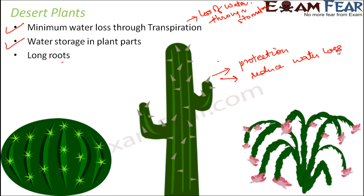Desert plants also have long roots so that the roots can go deep under the ground in search of water. In desert areas the water table is at a very low level, so you need to dig very very deep in order to get underground water. That is why these plants have long roots — so the roots can go deep under the ground and fetch some water for the plant.